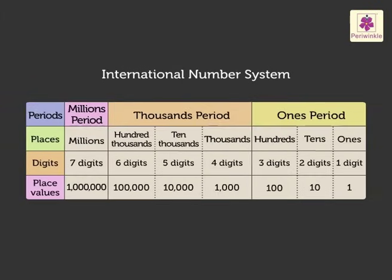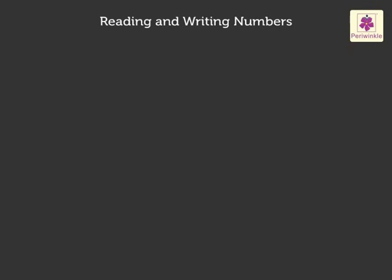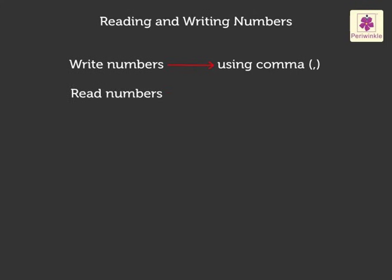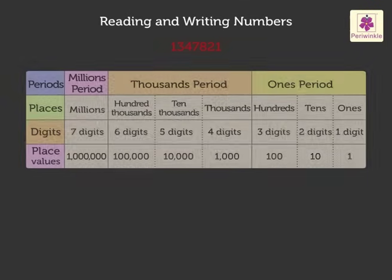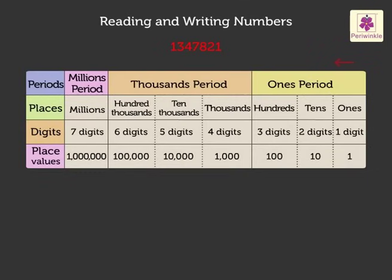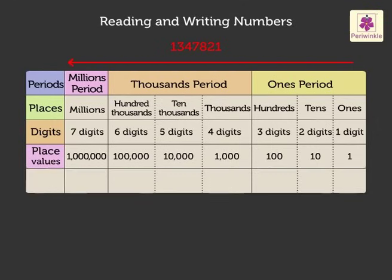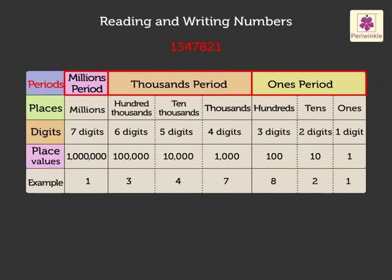Now, let us learn to read and write numbers using the International Number System. We write the numbers in the standard form using commas and read the numbers using the periods. Look at the example on the board. We begin from the right and insert a comma after every three digits. That is, we divide the number into its periods, then read each period separately.